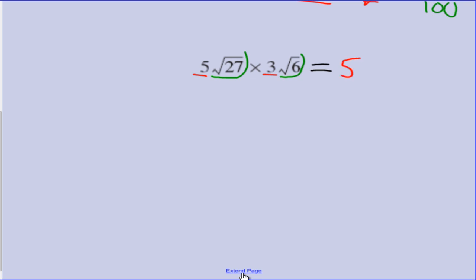So out the front, we will have 5 times the 3, and we can put that in brackets, and dealing with the surds, we can have the square root of 27 times the square root of 6. And we'll close that bracket off. 5 times 3 gives us a 15. Done.